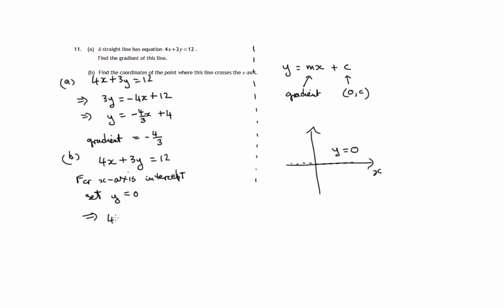So we'll have 4 lots of x plus 3 times 0 equals 12. Well, 3 zeros are just 0. 4x equals 12. Divide both sides by 4. We'll get x equals 3. 4 threes are 12. So it says find the coordinates of the point where this line crosses the x-axis.